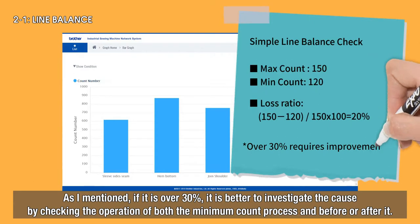As I mentioned, if it is over 30%, it is better to investigate the cause by checking the operation of both the minimum count process and before or after it.